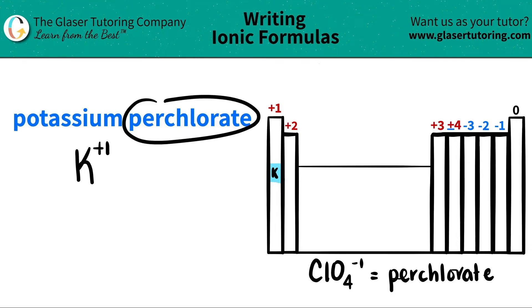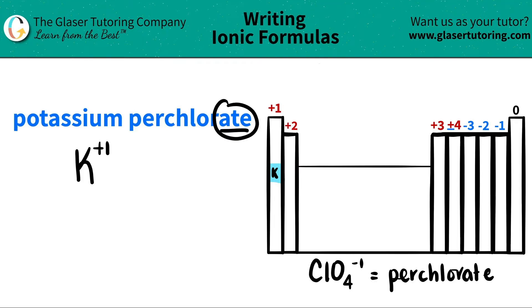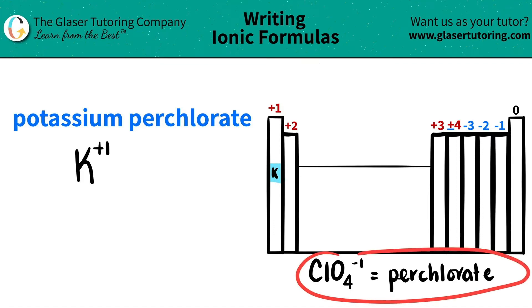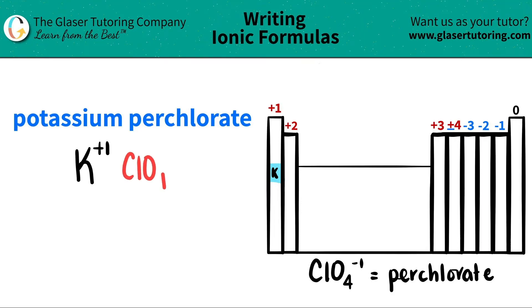The next thing I have is perchlorate. I see that it's an ATE ending, and all ATE endings are polyatomic ions. They are never going to be found on the periodic table, so you have to memorize them. For the sake of the video, I wrote down what perchlorate is — just use this as a flashcard, write it out, do whatever you got to do to memorize that perchlorate is ClO4 with a negative one charge.